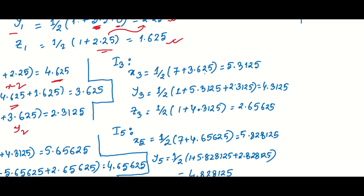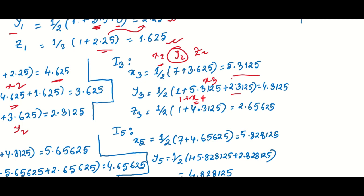For the third iteration, x3 is equal to half of 7 plus y2 plus z2. We use x2, y2, and z2 as the base values. X3 is equal to half into 7 plus 6 point something, giving approximately 3.5625. Then y3 and z3 are computed using the updated values.